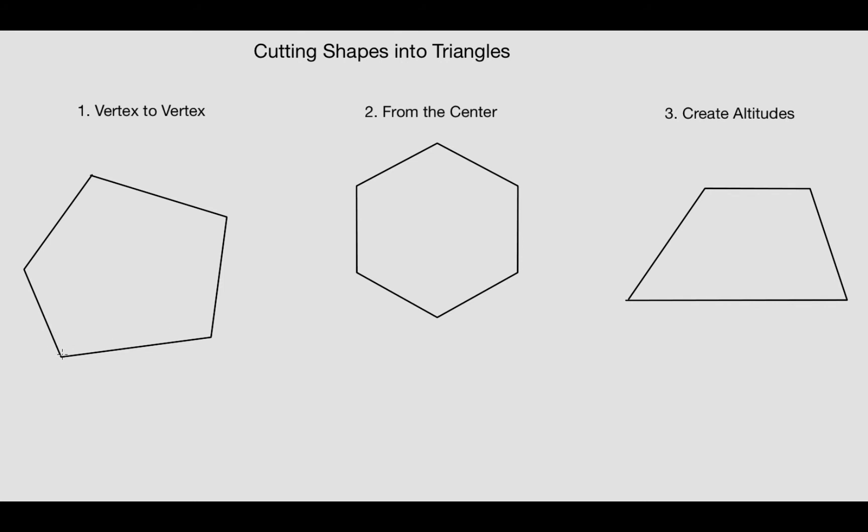One way we can do that is what I'm going to call the vertex to vertex method. You can see I'm just traveling from a vertex to a non-adjacent vertex and cutting it up into triangles. So here we have a five-sided figure and it created one, two, three triangles.